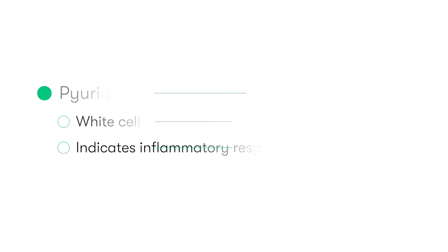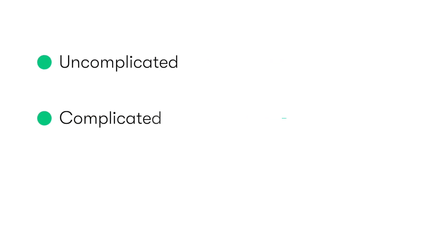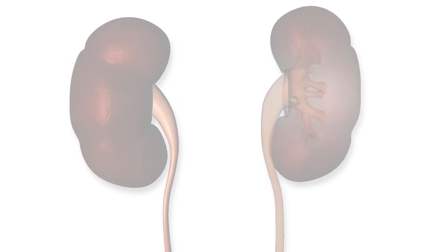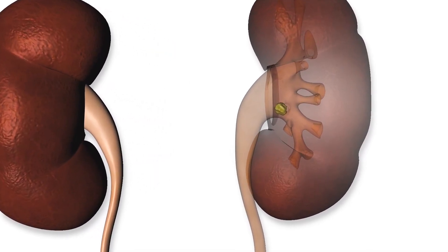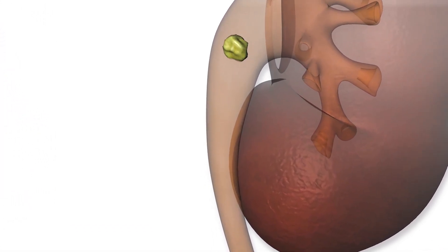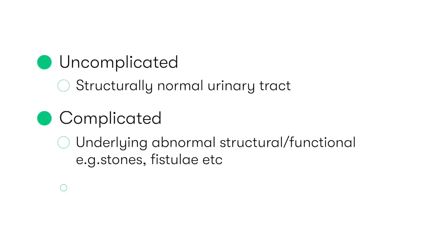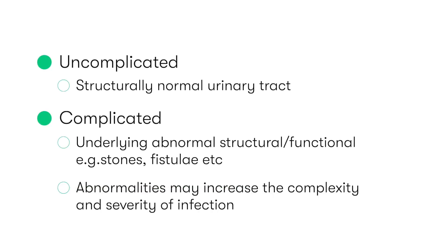We can further describe urinary tract infections as being either uncomplicated or complicated. In uncomplicated cases, this is the presence of an infection within a structurally normal urinary tract. In complicated cases, there is an underlying abnormality in the structure or function of the urinary tract — for example, in a patient who has a urinary tract stone — and these underlying abnormalities have the potential to increase the complexity and severity of the infection.